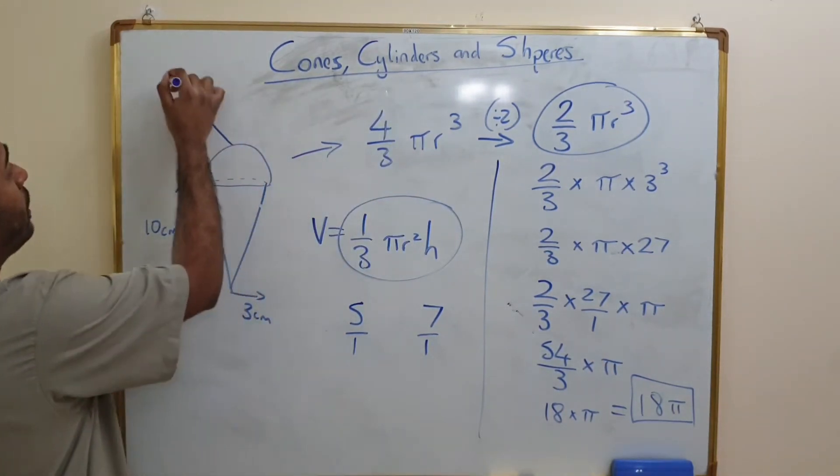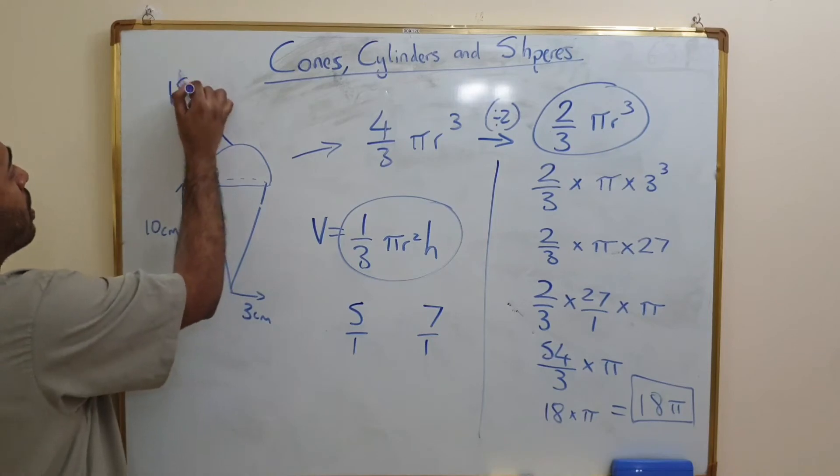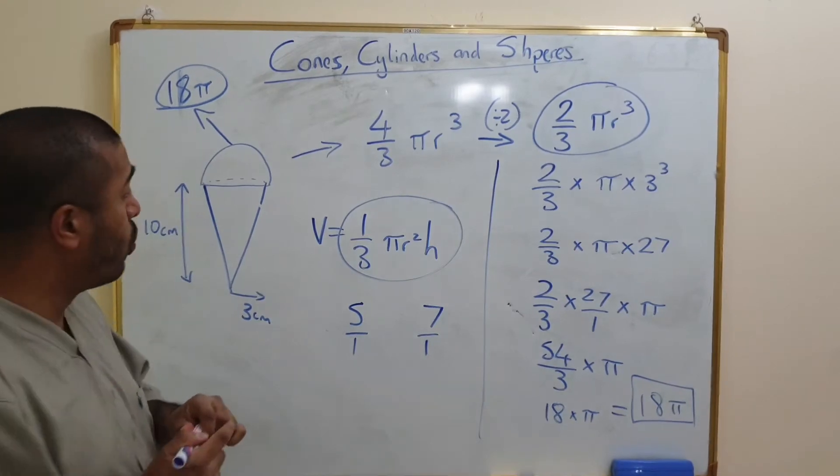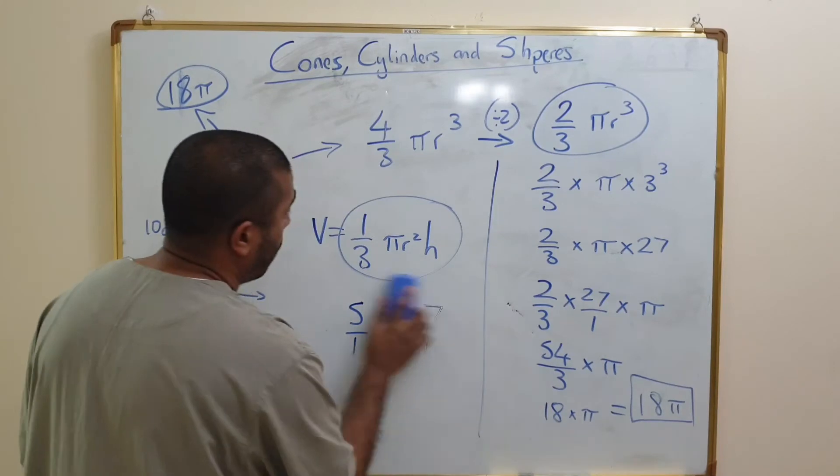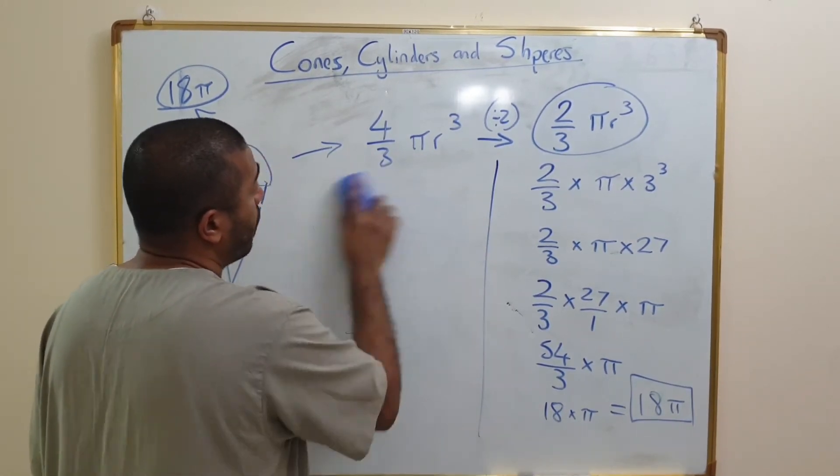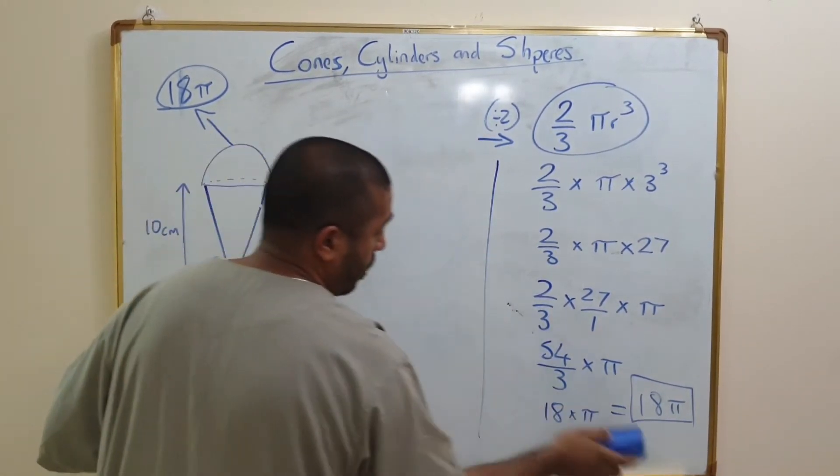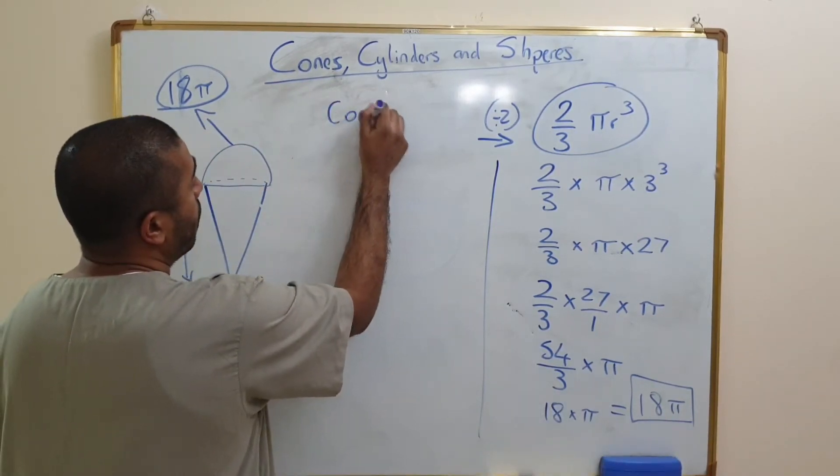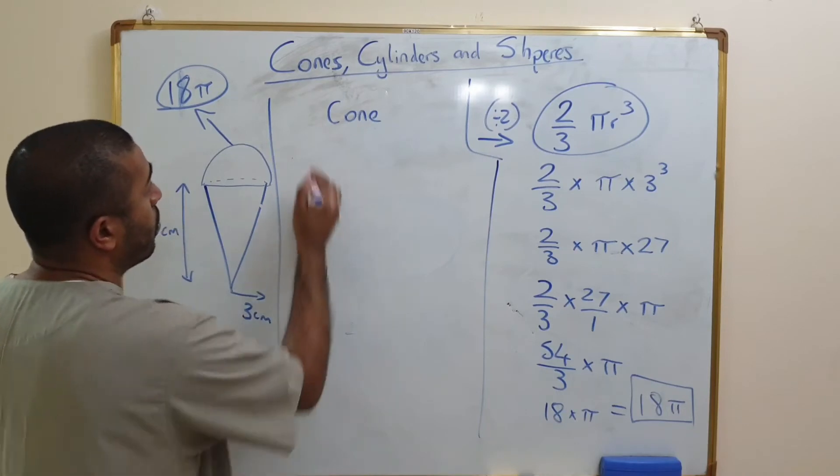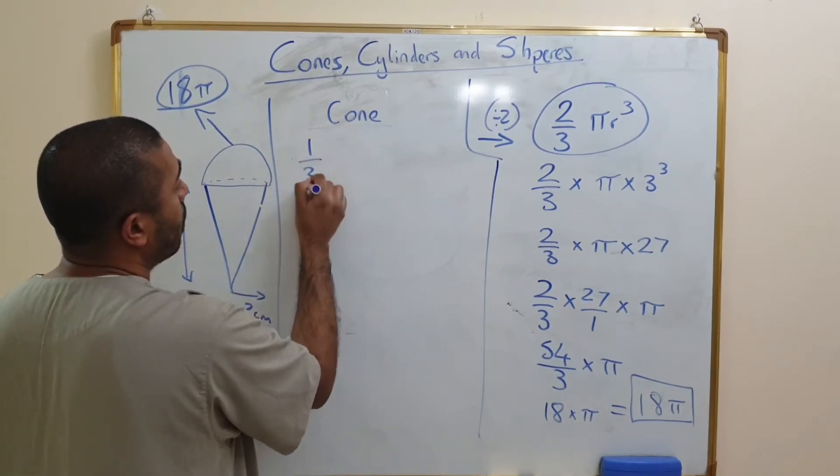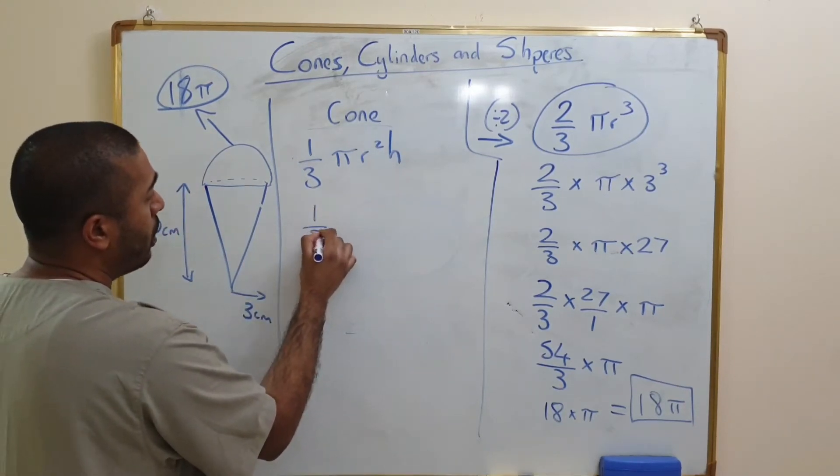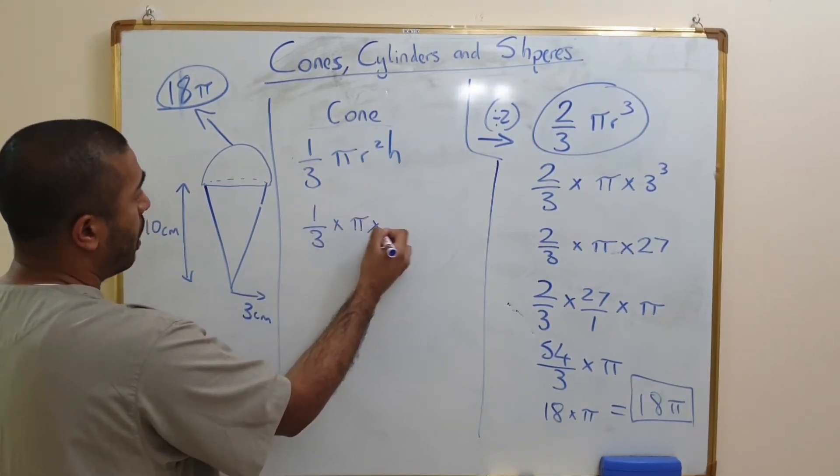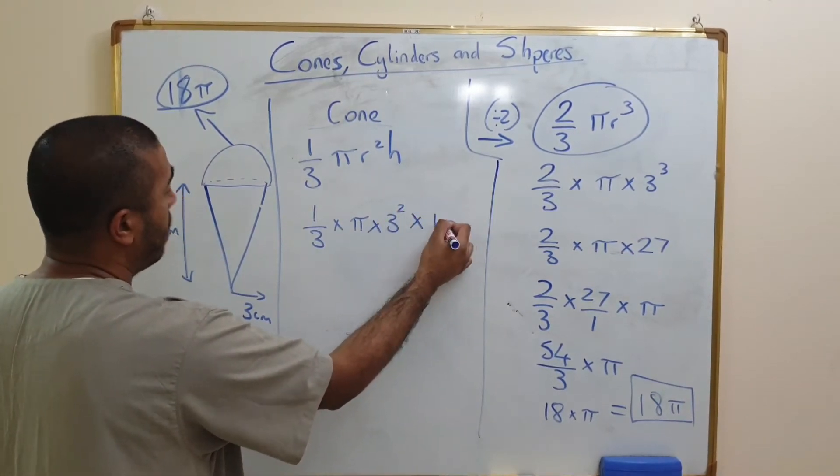And the second one is to work out the volume of the cone. Now I'm just going to move this up slightly. So don't forget it's 1/3 πr² into the height, so that's 1/3 times by pi times by 3 squared times by 10.